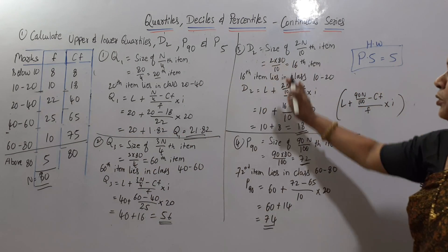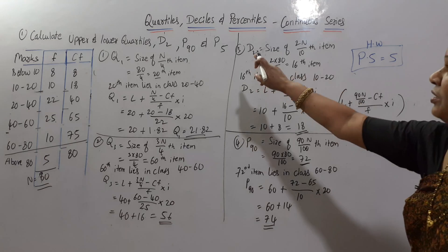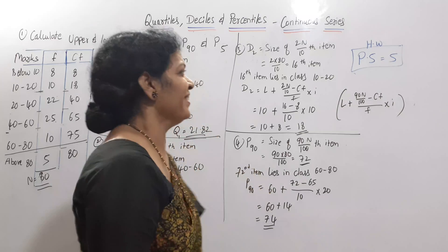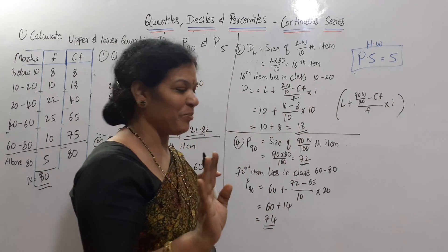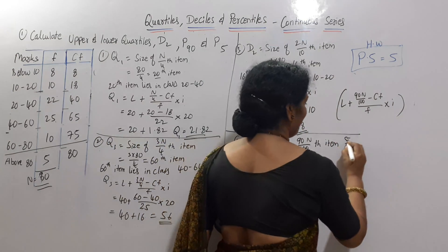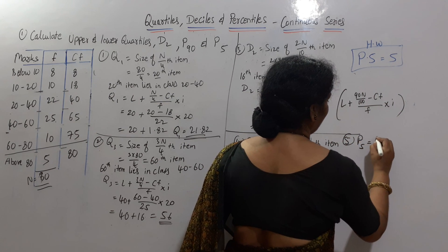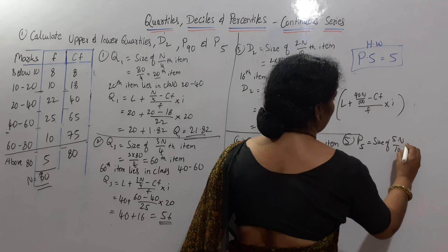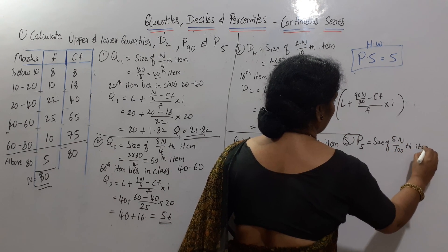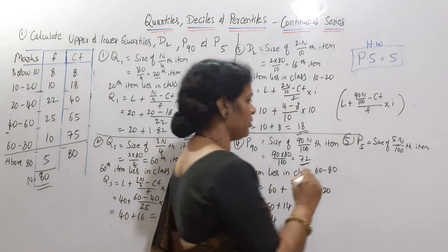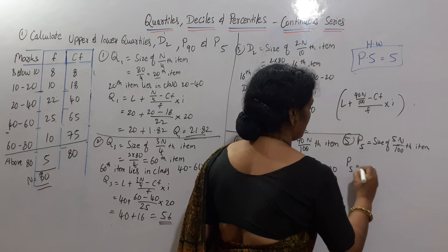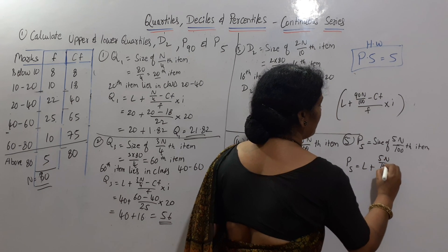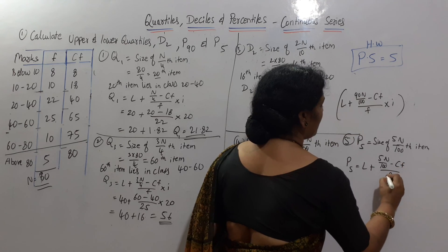So we have found Q1, Q3, D2, and P90. Now P5 is left as homework. The formula for P5: first formula is the size of 5n by 100th item. The second formula is P5 equals L plus (5n/100 minus cf) by frequency, into i. The answer for P5 is 5. Can you explain it? Write your answer in the comment box.